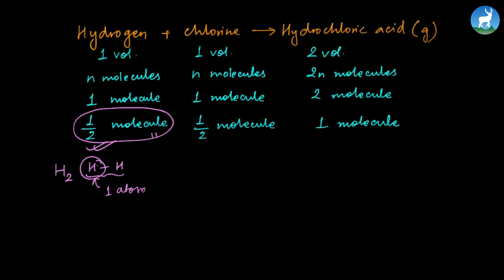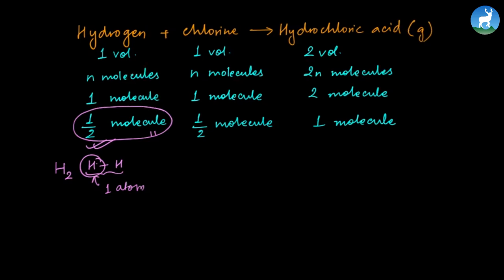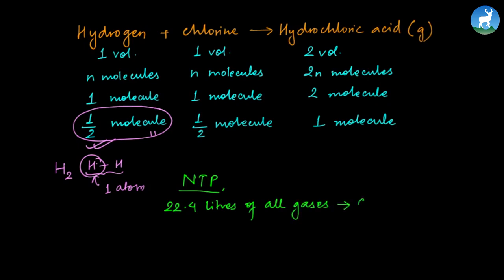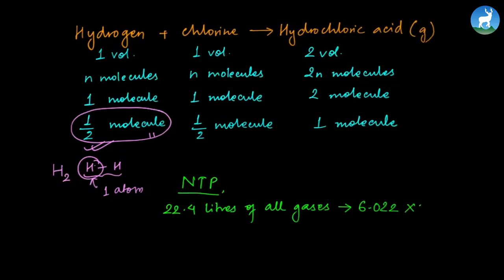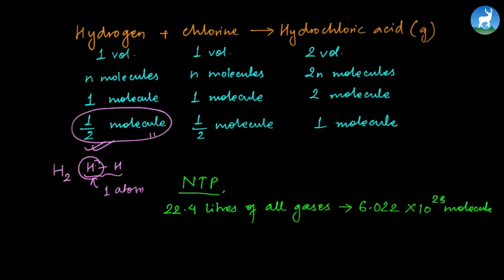Avogadro's Hypothesis is valid experimentally. All gases at normal temperature and pressure condition, or NTP state, have equal volume — suppose 22.4 liters.